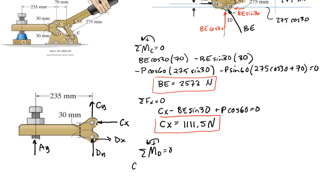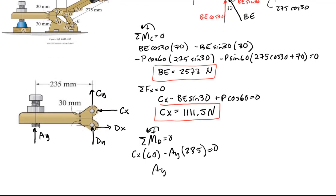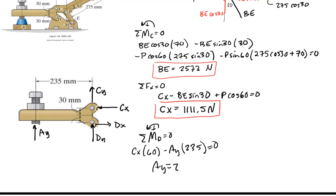Sum of moments about D equals zero. So I have CX times 60 minus AY times 235 equals zero. I got AY, which is now the unknown clamping force, equal to 283.8 newtons. There's the clamping force - that's what we were looking for.